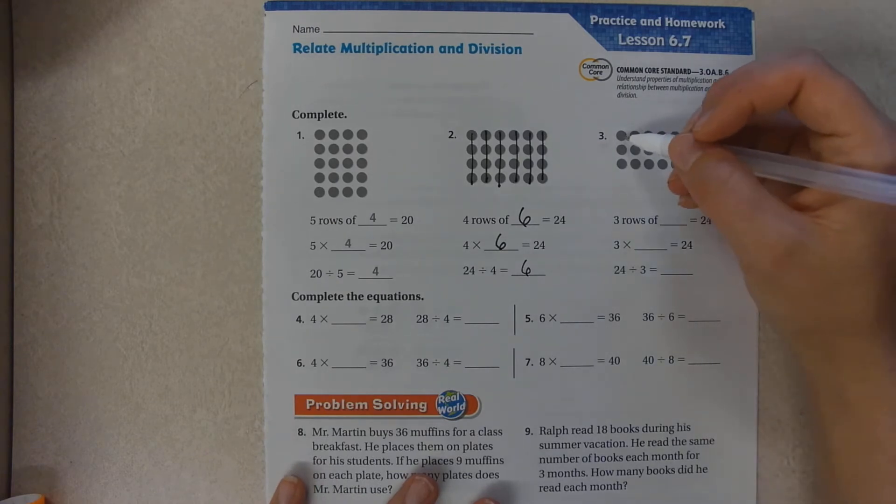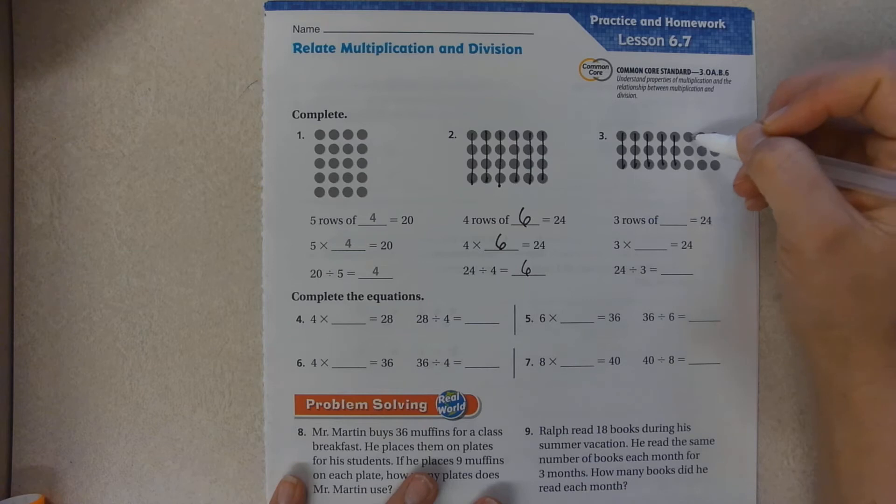We have rows of 3. 3, 6, 9, 12, 15, 18, 21, 24.